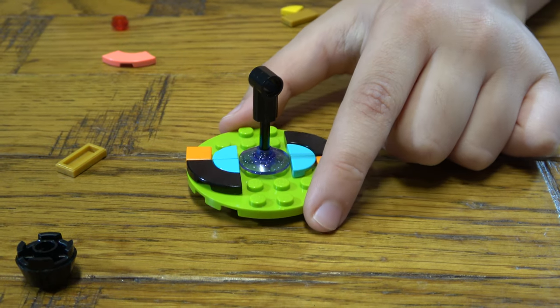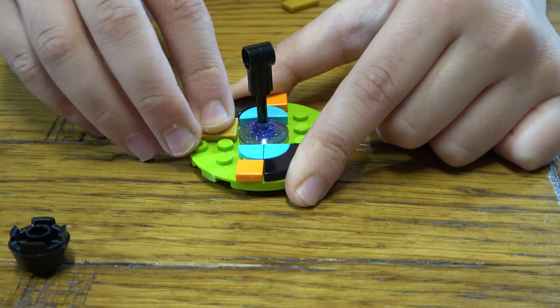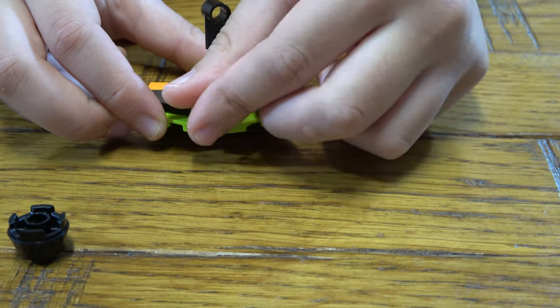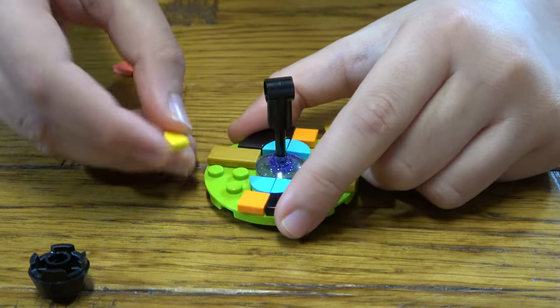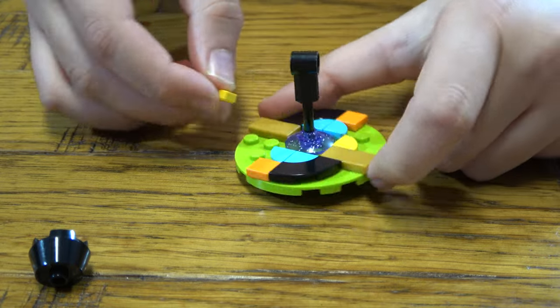Then the next thing you need to do is get this, place a gold bar where the black ends or starts. Then place two of these, this round bit facing outwards. Do that twice.